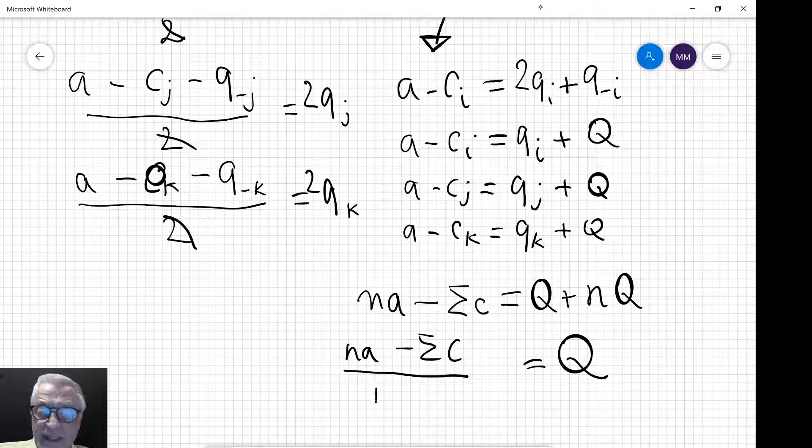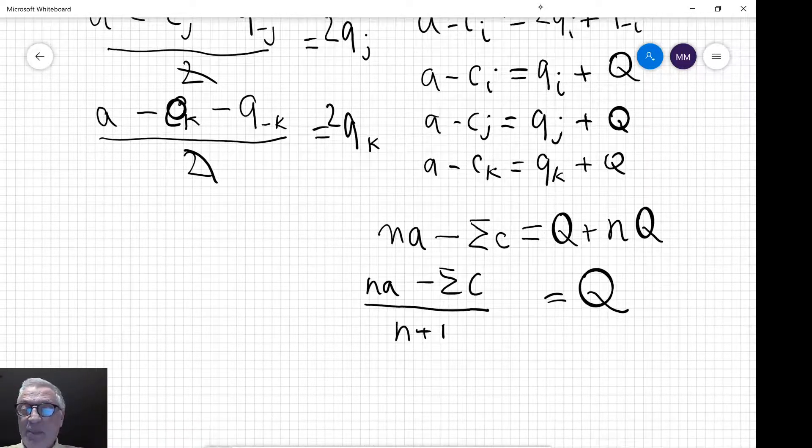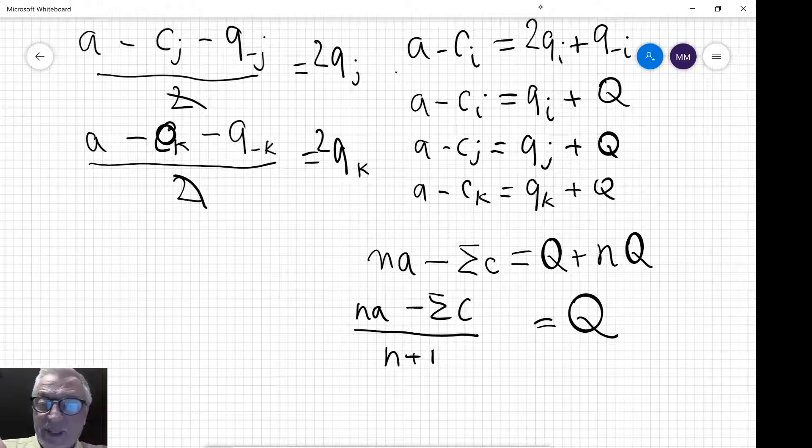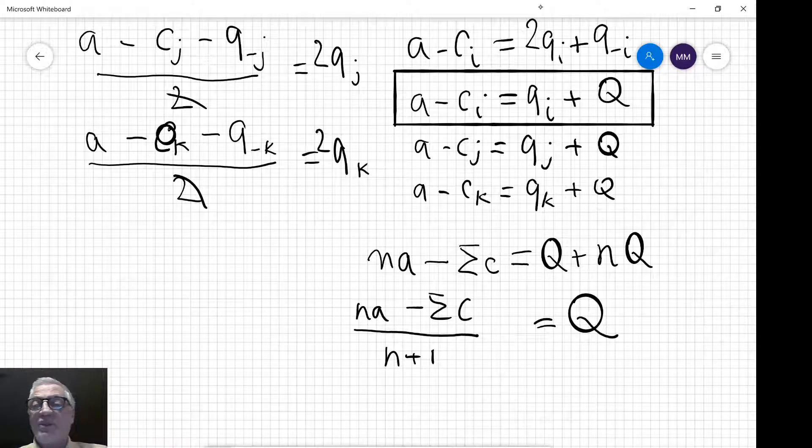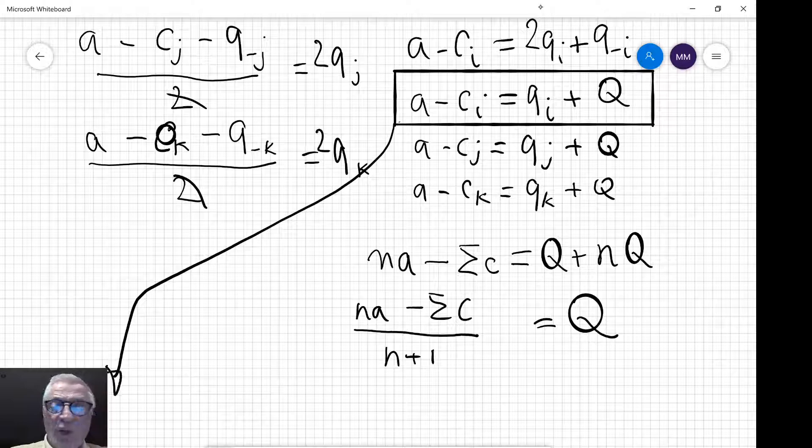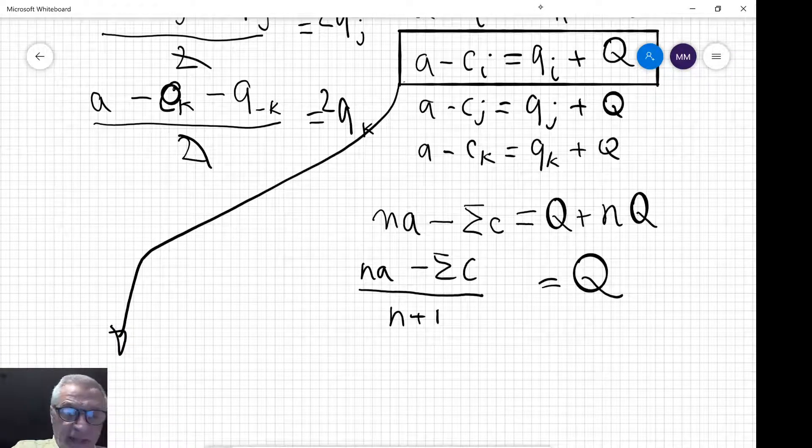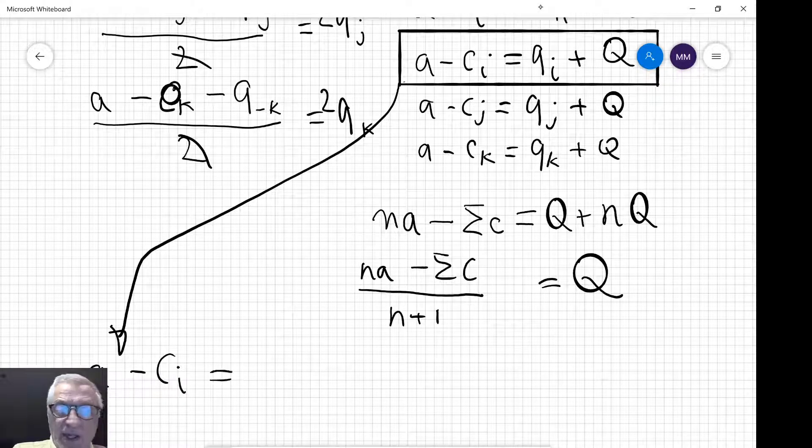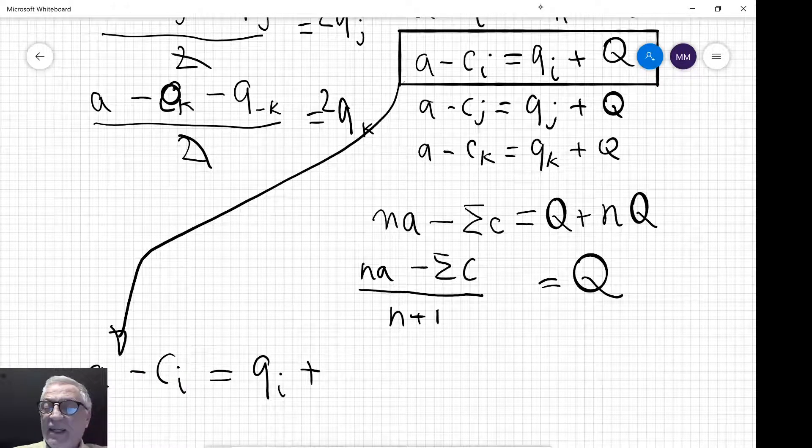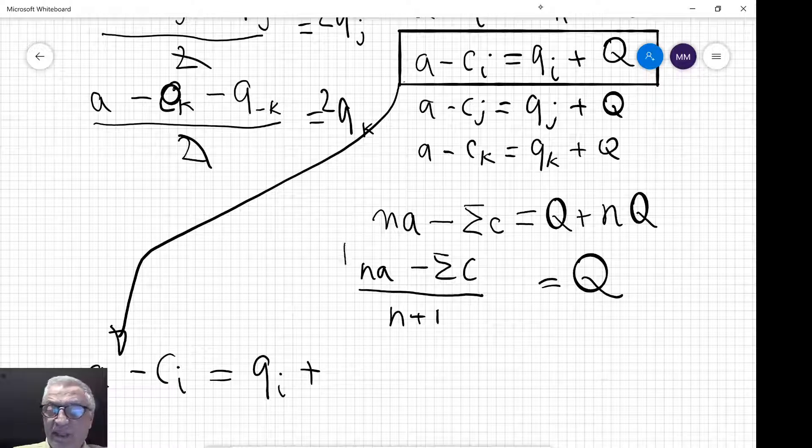So now we're nearly there because that tells me that total output is equal to n times a minus the sum of all costs divided by n plus 1. So we're nearly in business because let's return to our best response function for a typical firm I.